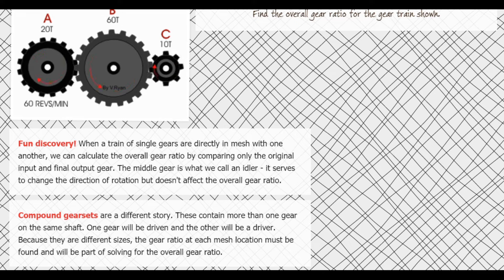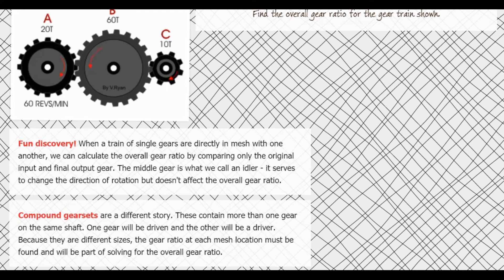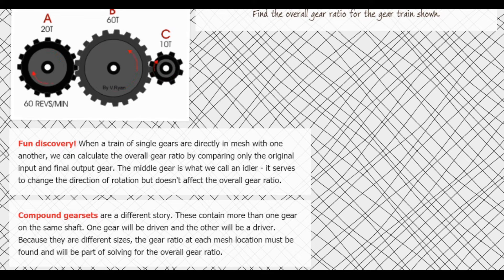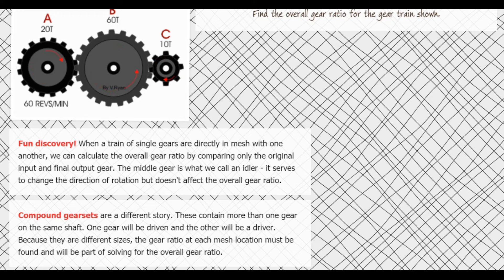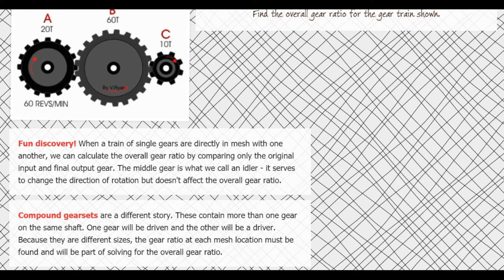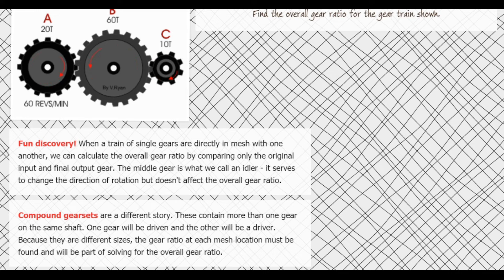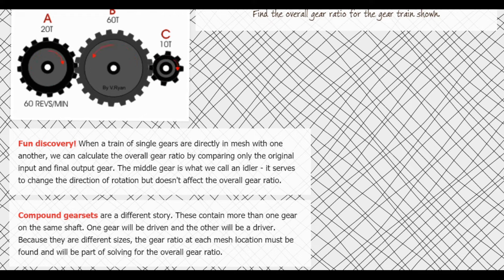So we can find the overall gear ratio of a gear train just by comparing the number of teeth on the final output gear to the original input gear. The gears in the middle are called idlers — they're there to change direction. If you want A and C turning in the same direction, you put gear B in between to do a double direction flip. However, this shortcut is not always true because of compound gear sets.